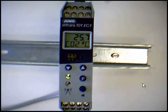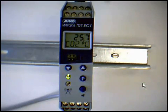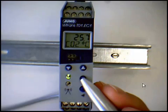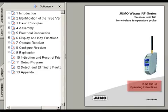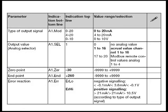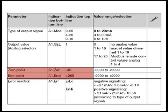Further configuration steps are realized in the parameter level. We reach the parameter level by pressing the P key for at least 2 seconds. Factory made, the analog outputs 1 and 2 provide the measuring values of the channels 1 and 2. Output is made as standard signal 0 to 20 milliamps, which corresponds to a temperature of minus 30 to 260 centigrades.